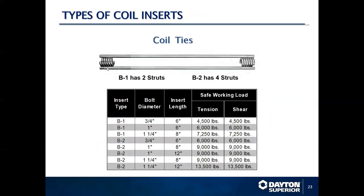Coil products can also be used as form ties. Coil ties are often used as lifting devices because of their availability in the industry. A B1 has two struts and a B2 has four struts — by adding additional struts, you increase the overall working load. Standard sizes for lifting inserts are typically six inch, eight inch, and up to twelve inches in overall length.